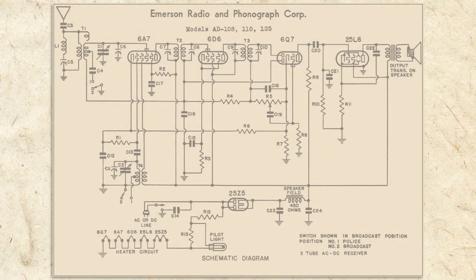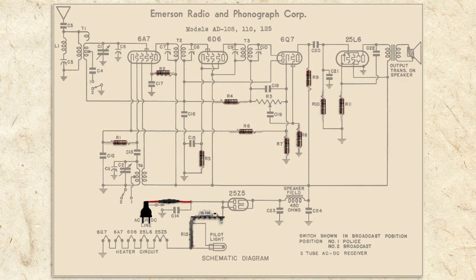Looking at our schematic, so far we've discussed the AC power cord, fuse, resistance cord replacement circuits, and resistors.